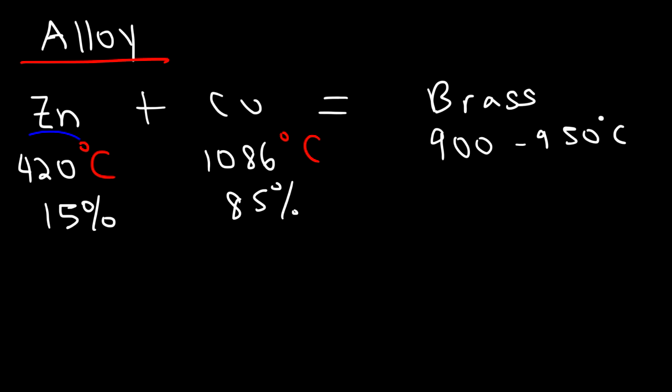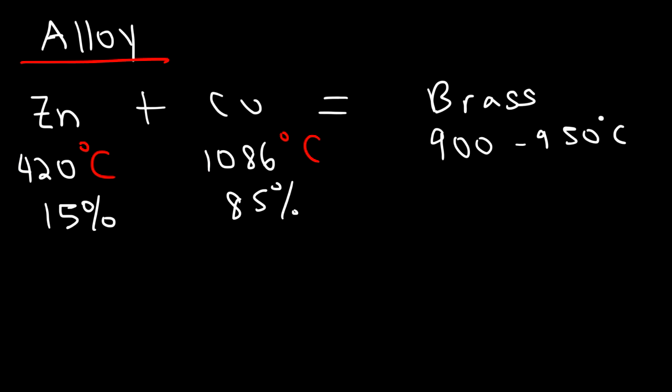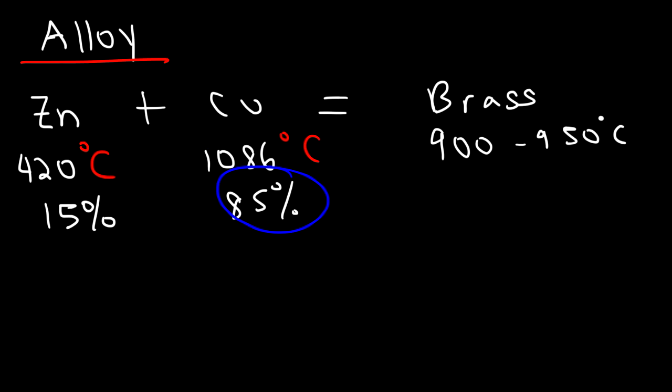Since it's predominantly made up of copper, the melting point of brass will be close to that of copper. Now sometimes you could have an alloy with a melting point that's lower than the individual melting points of the two metals that composed it, and the only way to get this very low melting point is to get a certain ratio between the two metals. But for the most part, if an alloy is predominantly one metal, the melting point will be very close to that of the predominant metal.